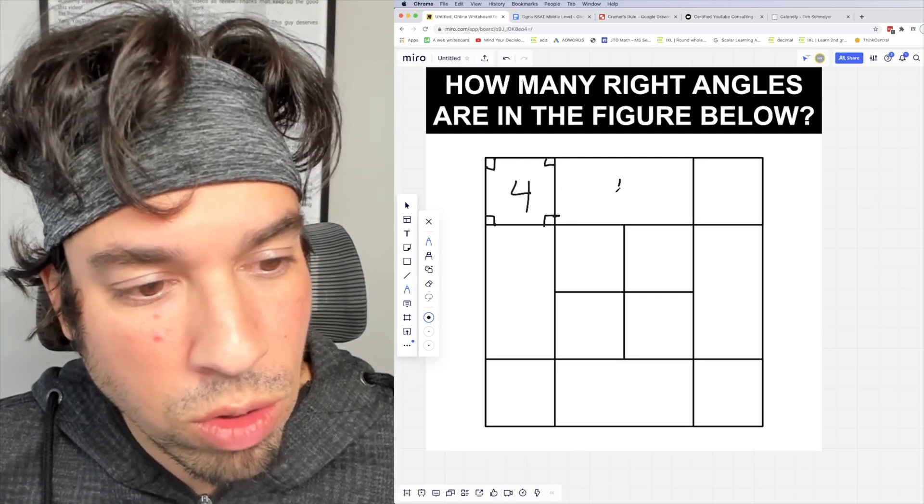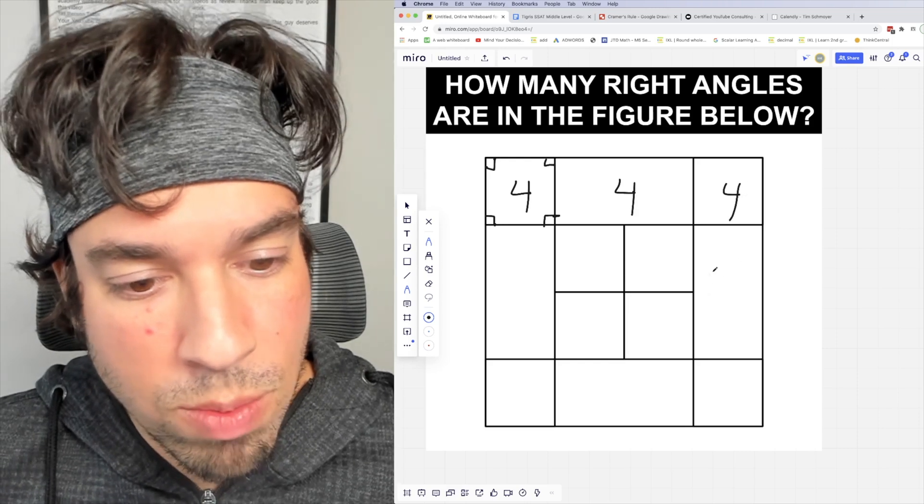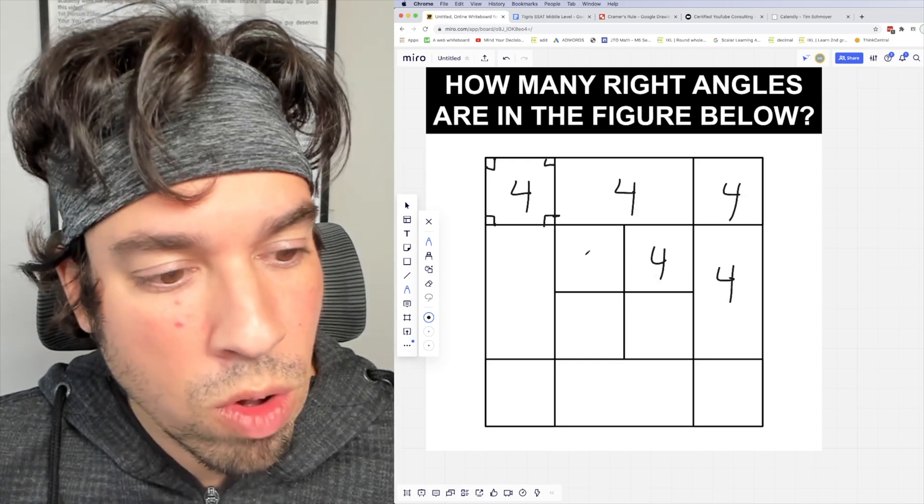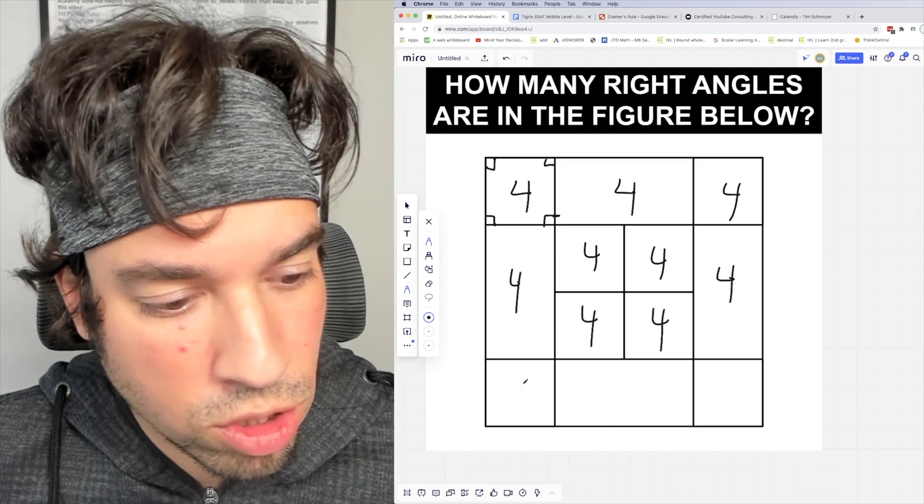So this has four. So does this one. So does this one. And then we can kind of mark up all the fours over here, like so.